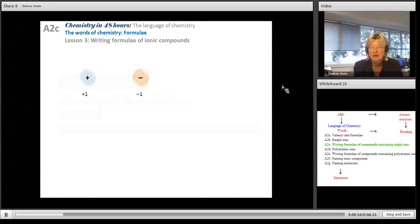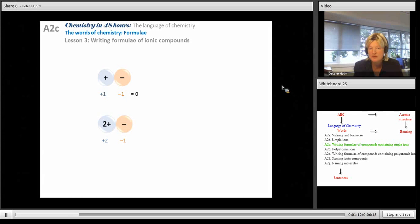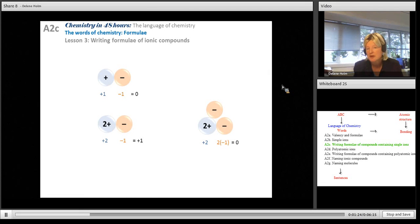If I have a cation with a charge of plus one meeting an anion with a charge of minus one, if I add the total charge I get zero. If I had a cation with a charge of plus two meeting an anion with a minus one charge, I do not have a total equal to zero, which means I need another anion. That will give me plus two plus two times minus one, an overall charge of zero.